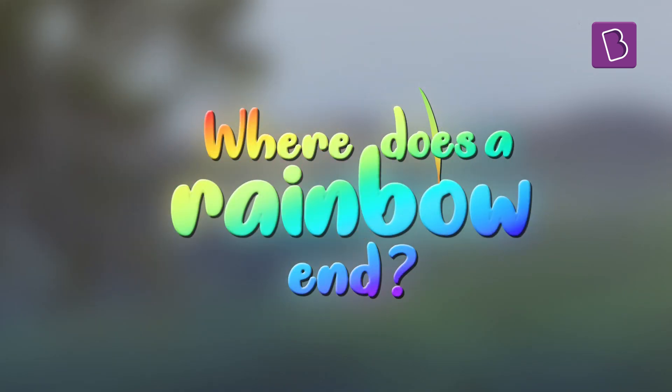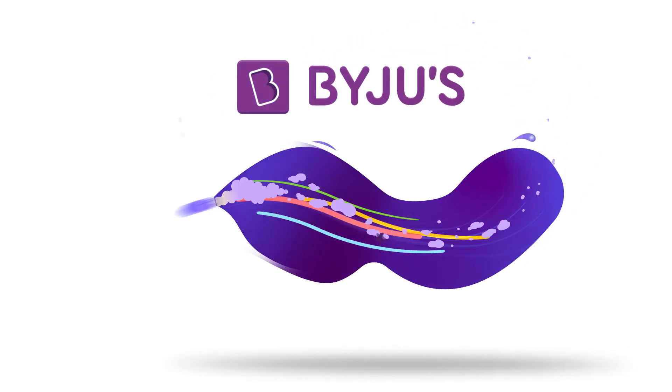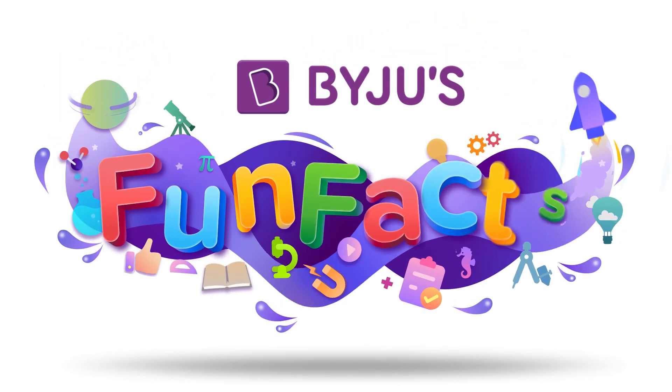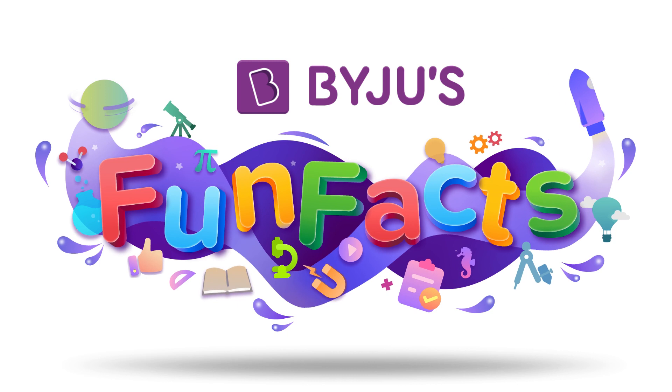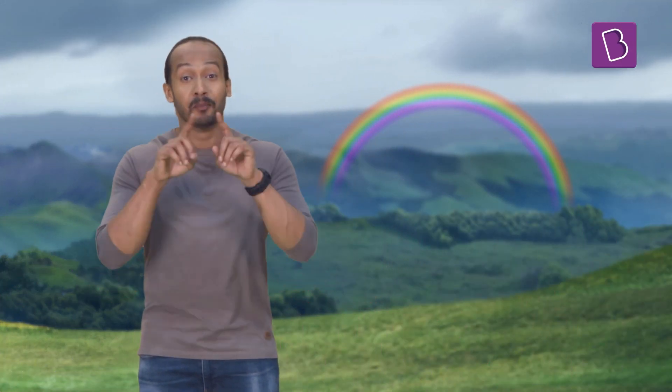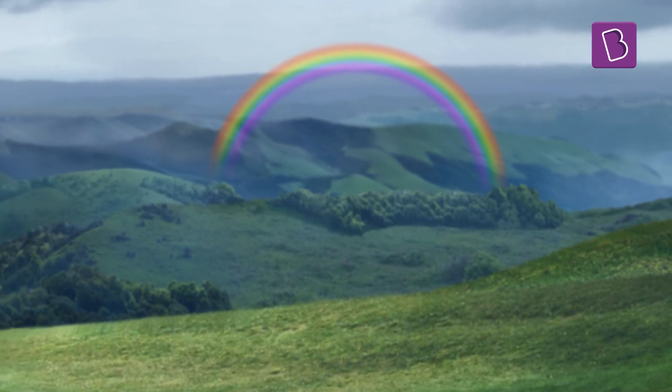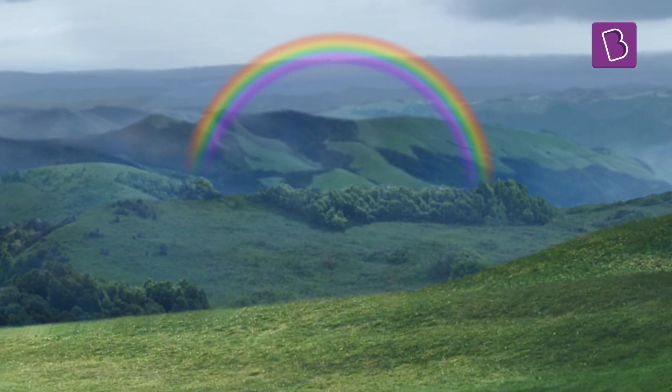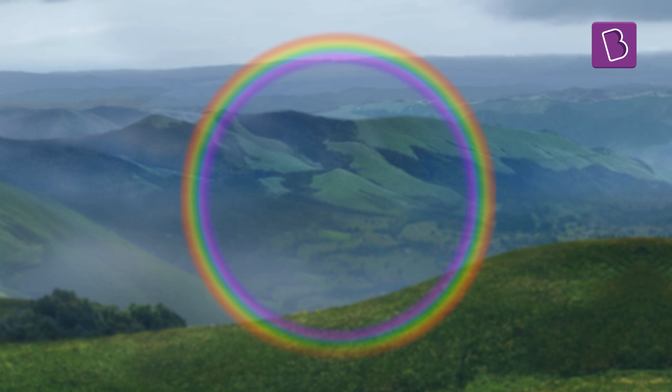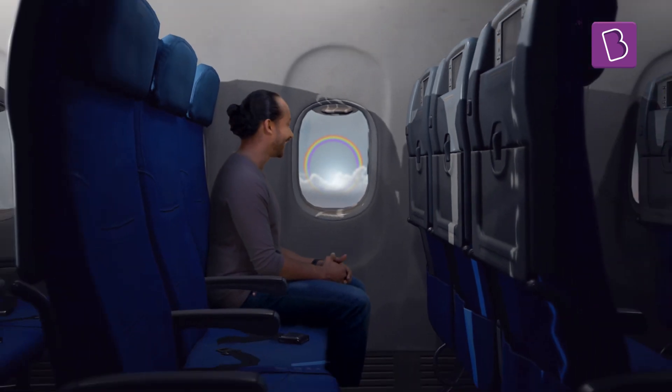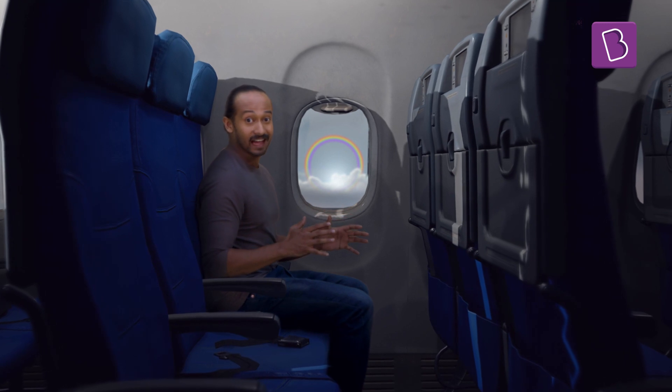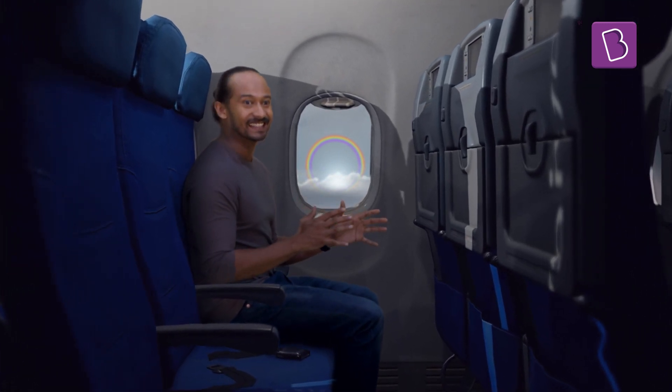Rainbows appear bow-shaped, but what if I told you that they actually form in circles? It's just that when you're on the surface, the bottom half of the rainbow is hidden by the ground. If you are up in the sky, you would now see the entire circle.